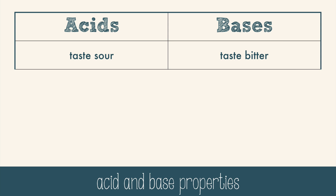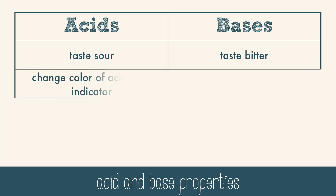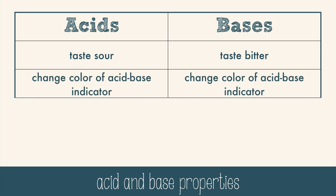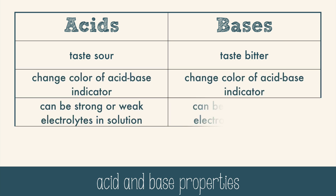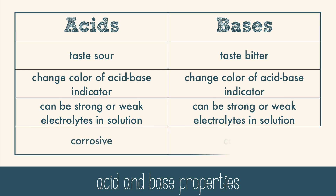Both acids and bases will change color in the presence of an acid-base indicator. They both can be strong or weak electrolytes in solution, and they're both corrosive. Always check the safety information when working with acids and bases to make sure that you protect yourself and your clothing.